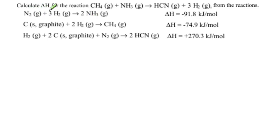The problem reads: calculate delta H for the reaction CH4 gas plus NH3 gas goes to HCN gas plus 3H2 gas from the reactions. These are three reactions for which we are given the change in enthalpy, and we're to calculate the final change in enthalpy.